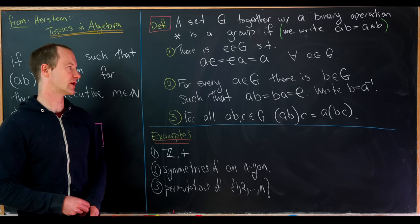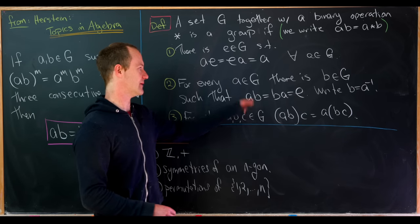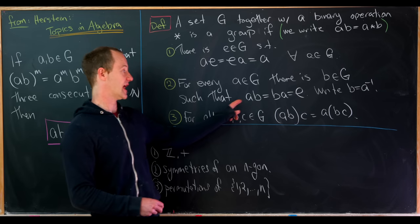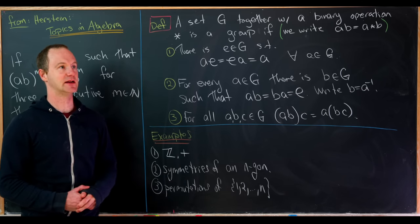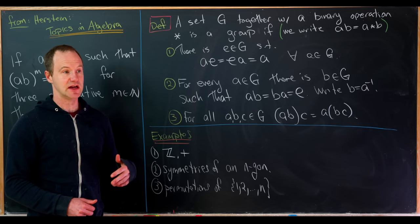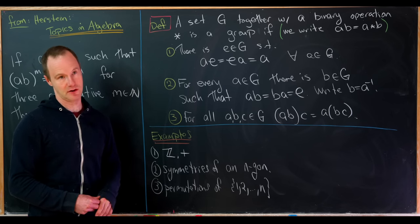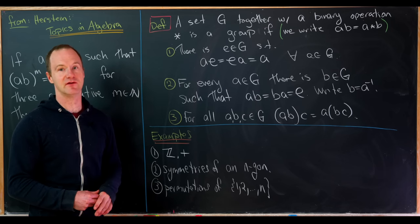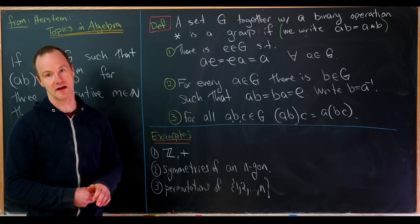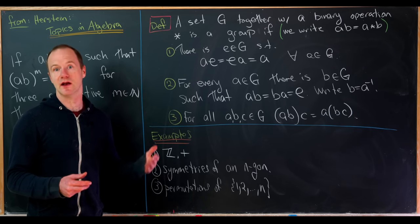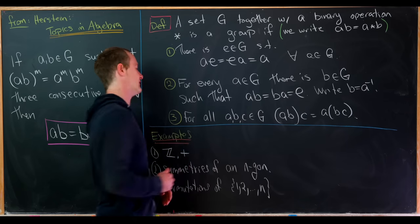The next axiom is the axiom of inverses: for every element a in G there is a b in G such that a times b equals b times a, which equals the identity. The inverse is like a path back to the identity. For the integers, the inverse of four is negative four, because four plus negative four gives back zero. For the non-zero real numbers under multiplication, the inverse of five is one-over-five, since five times one-over-five equals one.